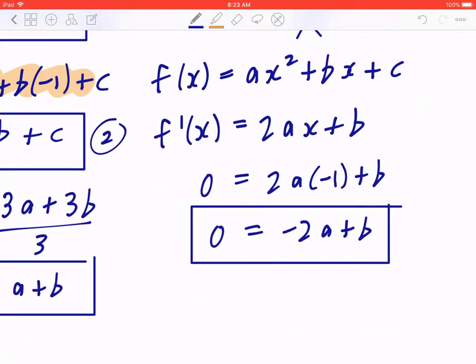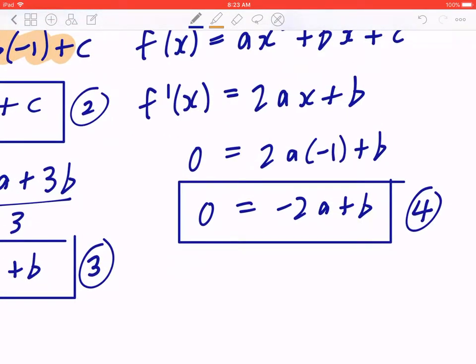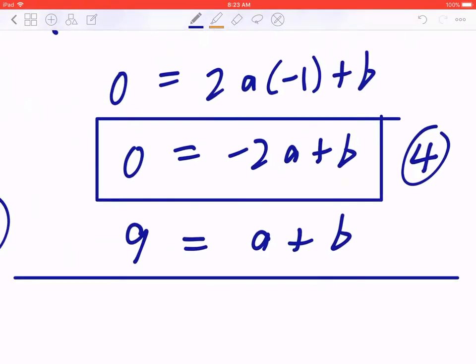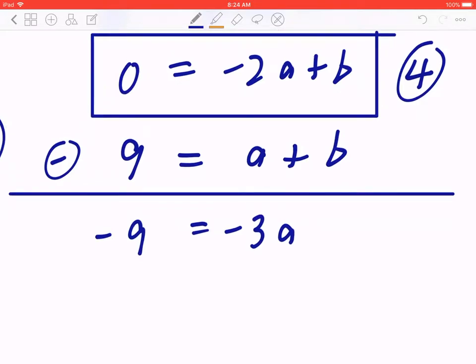If I go back and name this number 3 and name this number 4, you can line them up. So if I copy number 3 underneath number 4, 9 equals a plus b. And again, back in grade 10 academic math, if you have two equations, two unknowns, you can solve this by subtracting. 0 minus 9 is going to be negative 9. Negative 2a minus a is going to be negative 3a. If you divide the left side and the right side by negative 3, a equals 3.